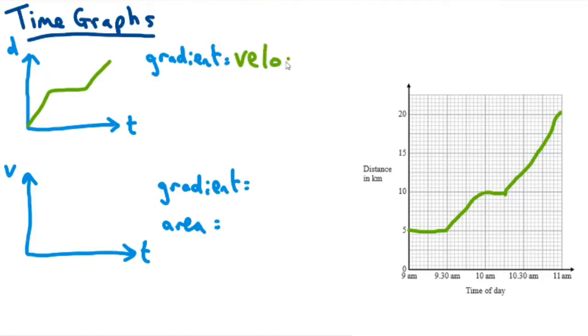And we can work out the actual value of that velocity with the gradient. So the gradient equals velocity or speed, if you prefer. For working out that gradient, you're then just using your y2 minus y1 over x2 minus x1.